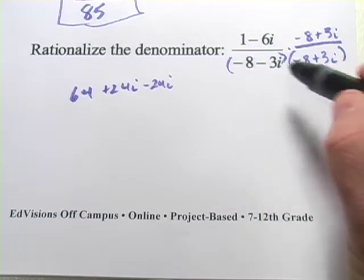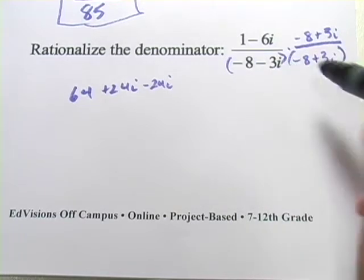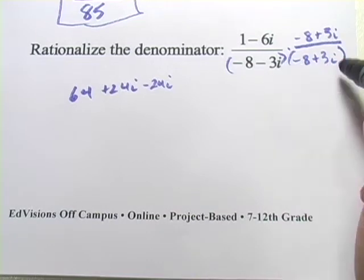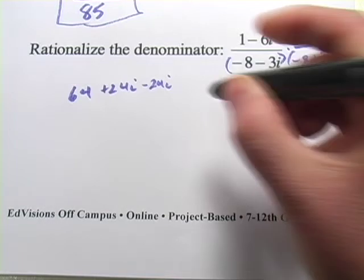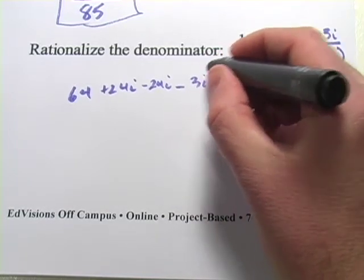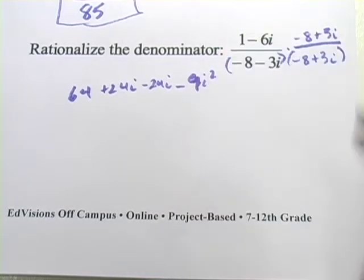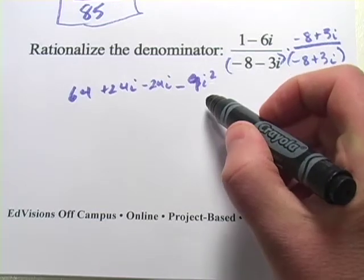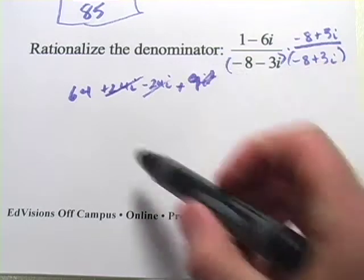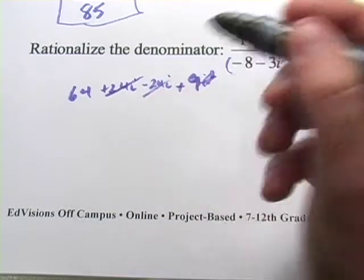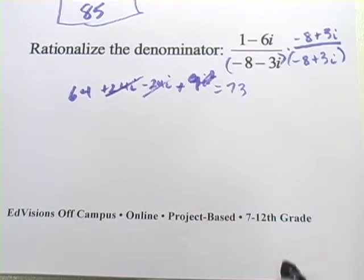The other way to think about this is the difference of squares. What we'll really get is this term squared minus this term squared. We've got negative 3i times 3i, so that's negative 9i squared. And remember this i squared is a negative 1. So this is actually a positive 9. Those i terms disappear. We've got 64 plus 9, so that equals 73. That's our denominator.